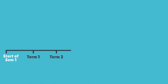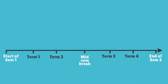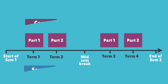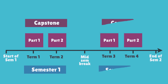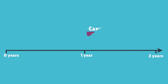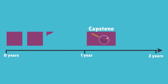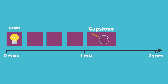Your research project will span over two terms. Part 1 and Part 2 need to be taken consecutively, in either Semester 1 or Semester 2. In order to be eligible for entry into the capstone, you must have completed at least four subjects, including the two core subjects, Foundations of Cancer and Cancer Research.